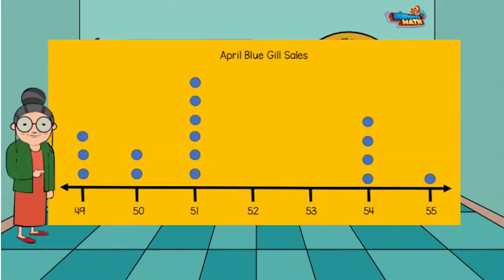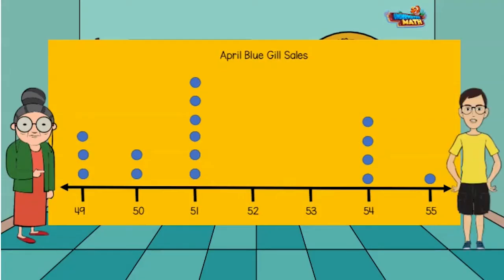So, when I look at this dot plot, there are three dots above the 49. So that means three different times in April we sold 49 bluegill fish. Gilbert is the name. That's what I said. Anyway, that is correct — at three different times in April, there were 49 bluegills sold.